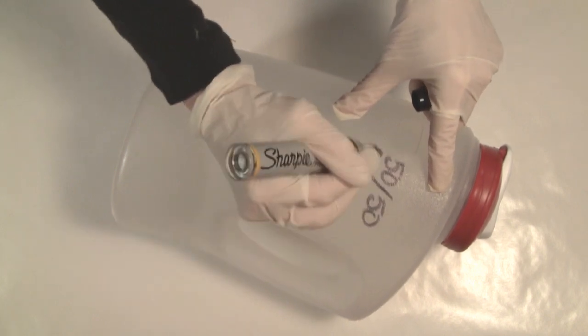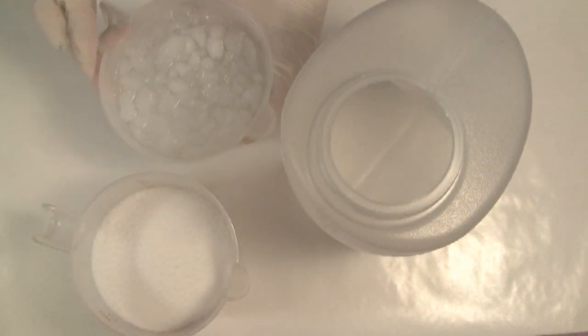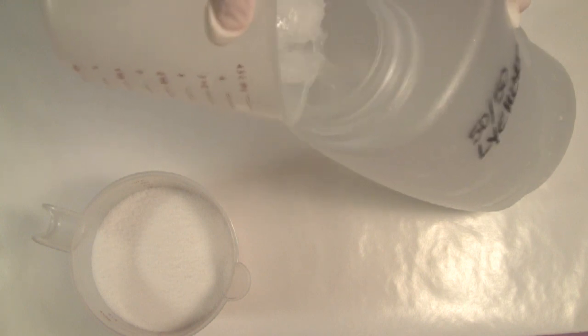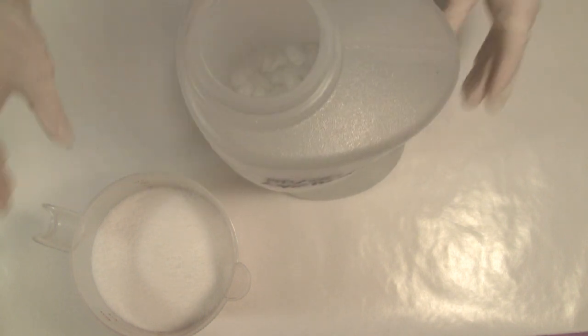Begin by clearly labeling your container. We are creating a 50-50 lye solution concentrate, meaning we will use equal parts of water and lye. To keep the temperature and the fumes low, I have replaced room temperature water with ice water. We add the ice water to the container, then an equal amount of sodium hydroxide.